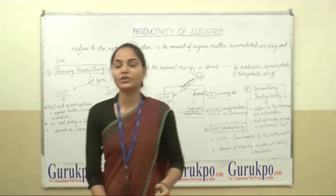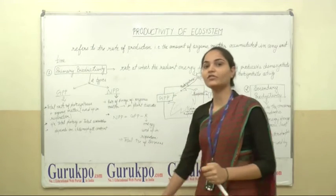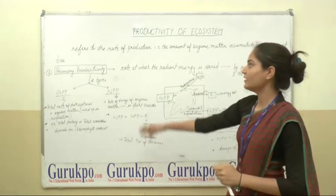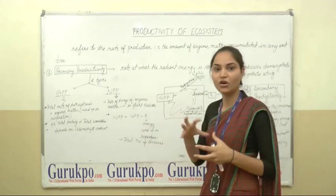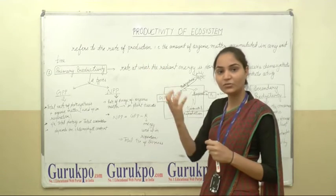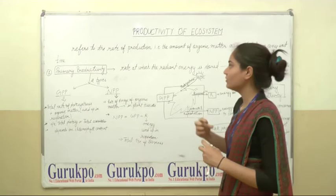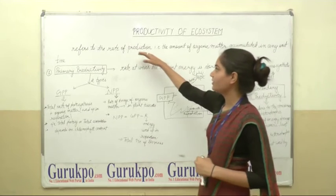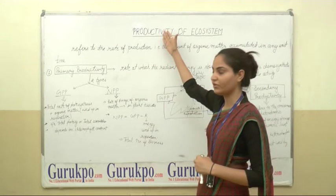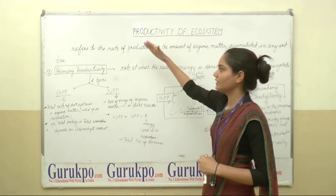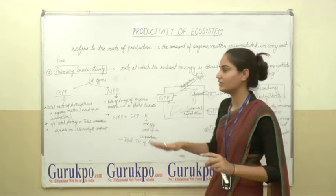So what is the productivity of ecosystem? Productivity of ecosystem refers to the rate of production, that is the amount of organic matter accumulated in any unit time. So the production rate is the productivity of ecosystem. This can be divided into different parts.